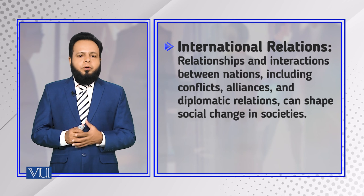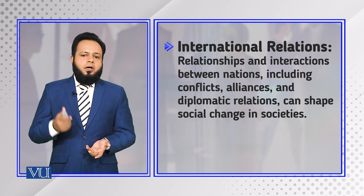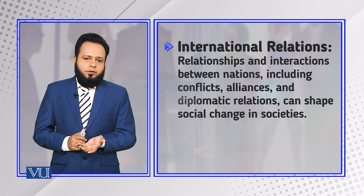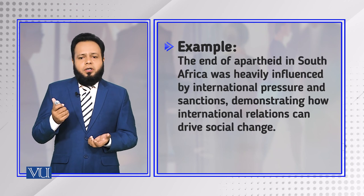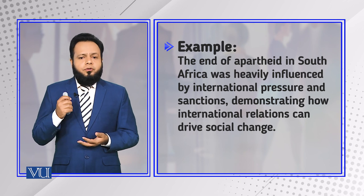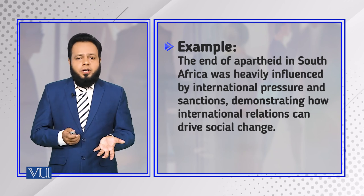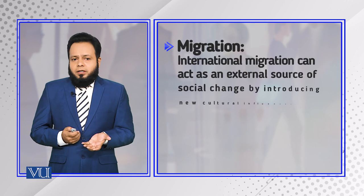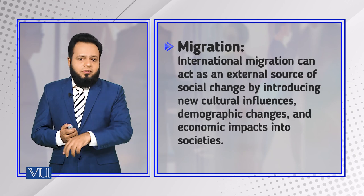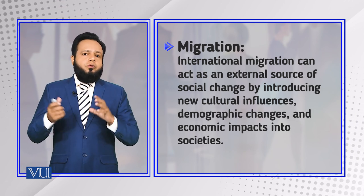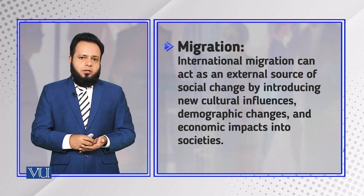Lastly, international relations — shaped by political situations between nations, including conflicts, alliances, and diplomatic relations — can shape social change across societies. For example, the end of apartheid in South Africa was heavily influenced by international pressure and sanctions, demonstrating how international relations can drive social change. Similarly, international migration can also act as an external source of social change, although migration can also be a consequence of political change.